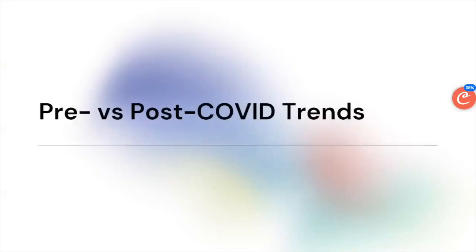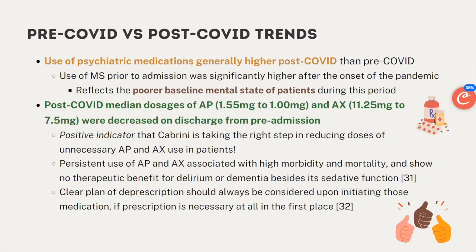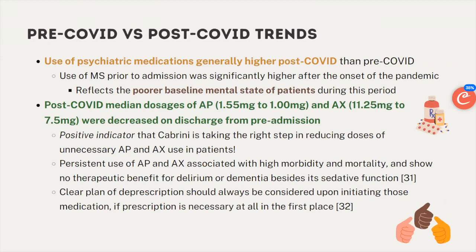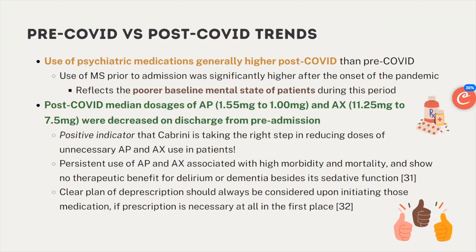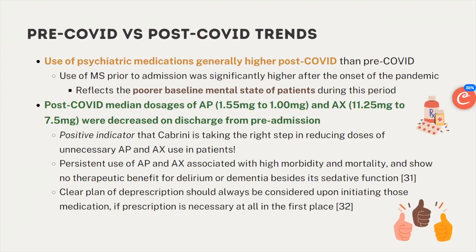For pre- versus post-COVID trends: post-COVID, the use of psychiatric medications at any point was generally higher, and there was significantly higher use of mood stabilizers pre-admission during the post-COVID period, reflecting a poorer baseline mental state. One positive finding was that post-COVID, the median doses of antipsychotics and anxiolytics were decreased on discharge compared to pre-admission, indicating that Cabrini is weaning patients off unnecessary doses of these medications.